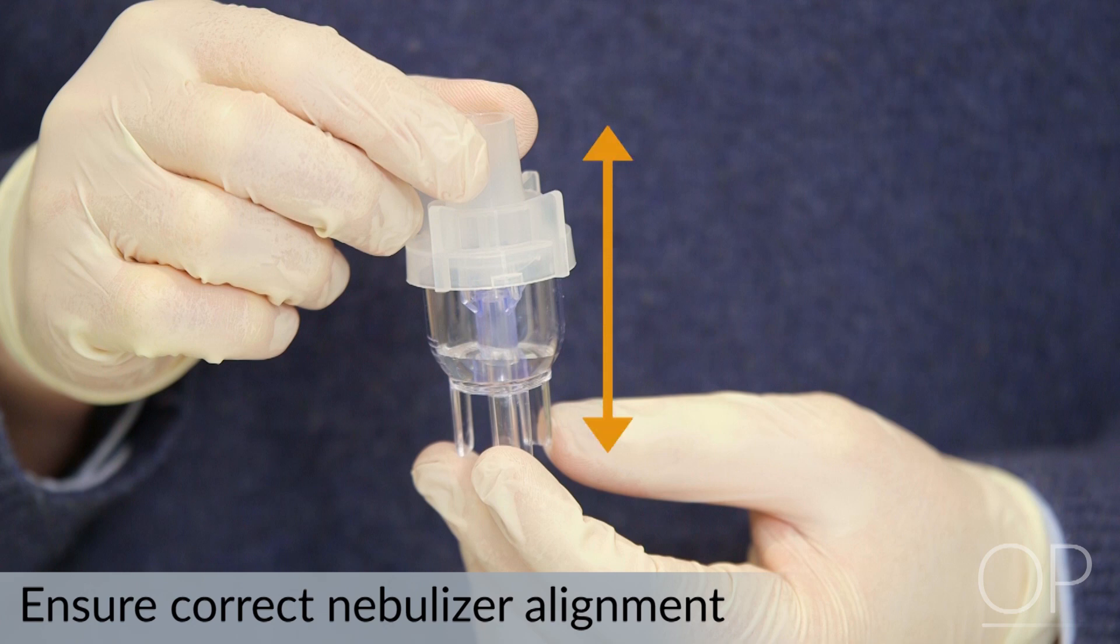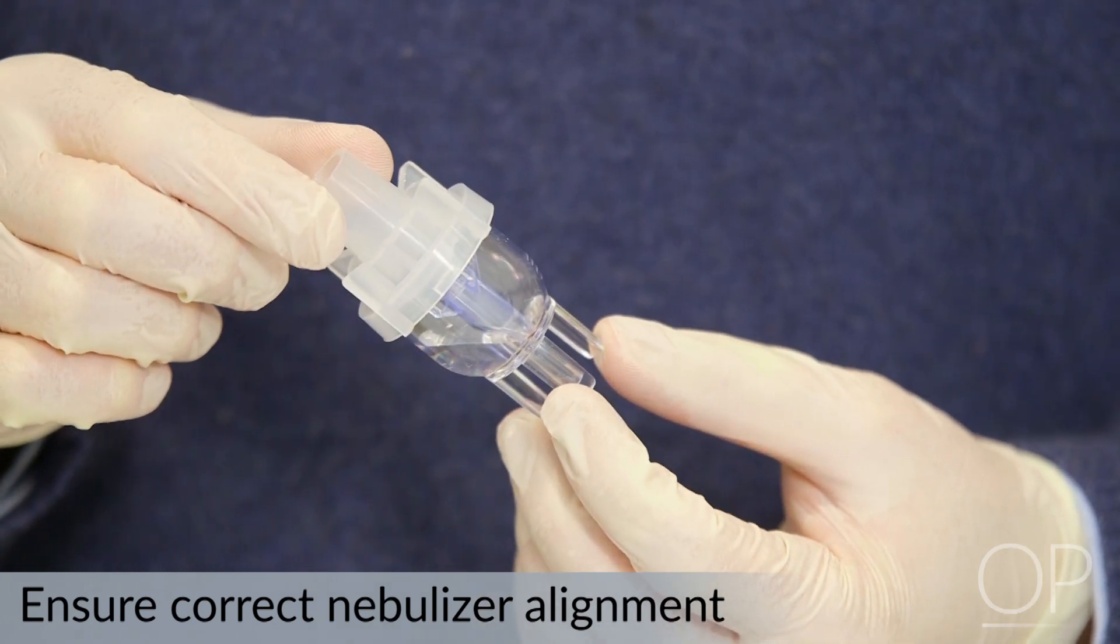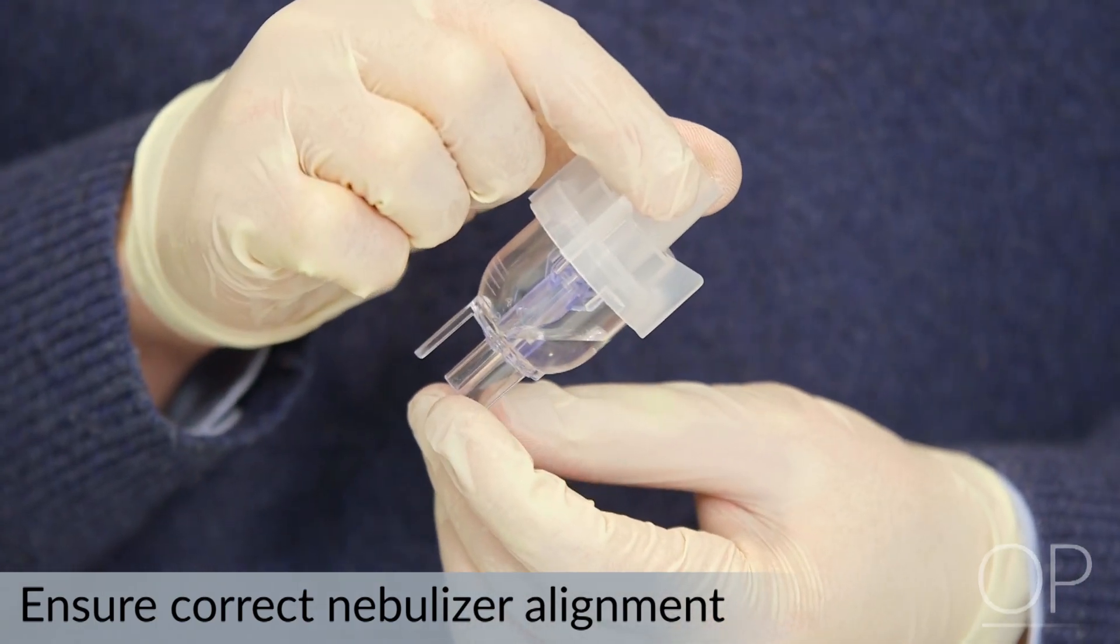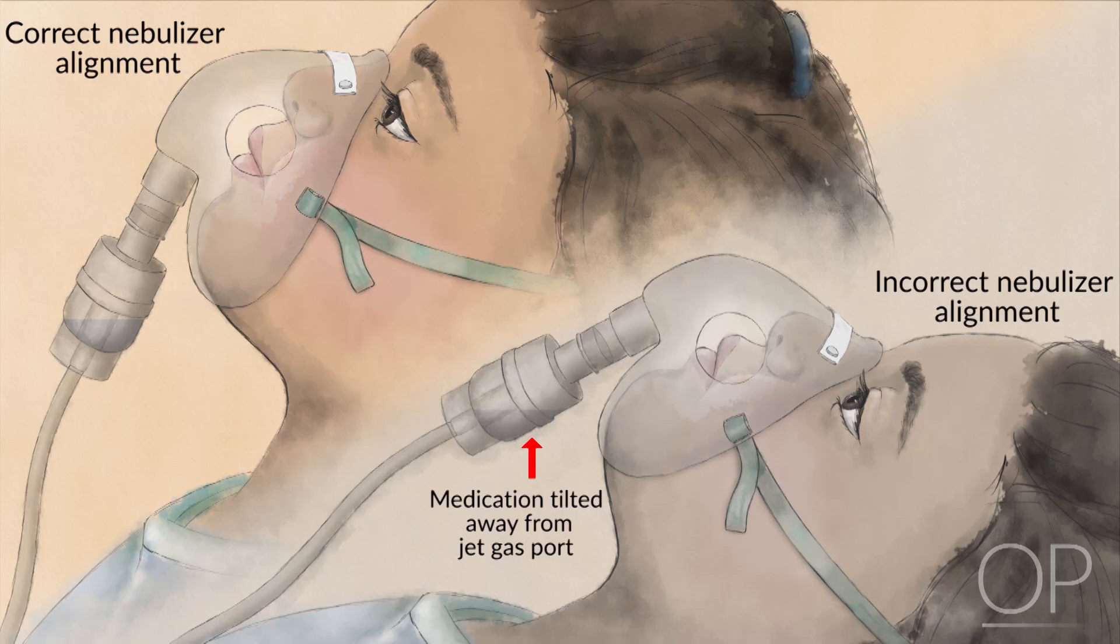An important performance note about jet nebulizers is that they should be oriented approximately vertically to work effectively. Tilting the device too far, perhaps 20 to 30 degrees in any direction, can cause the medication to move away from the jet gas port inside the device and render the treatment ineffective. If you notice a treatment is taking a long period of time or there doesn't appear to be an appropriate volume of aerosol generated, you may want to check the nebulizer to ensure proper vertical orientation.